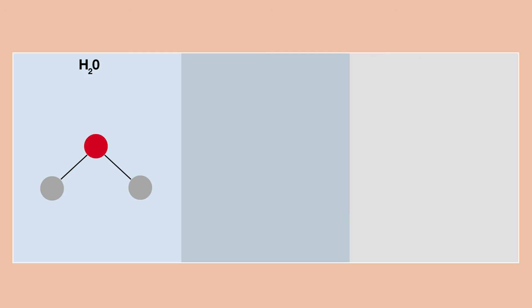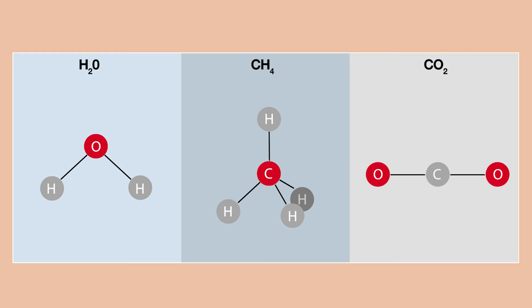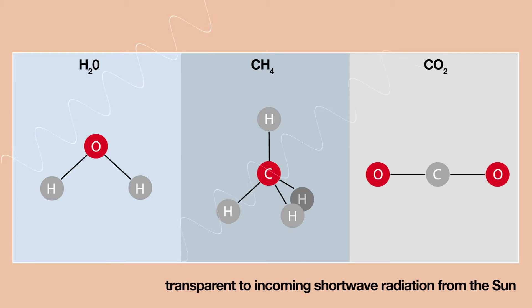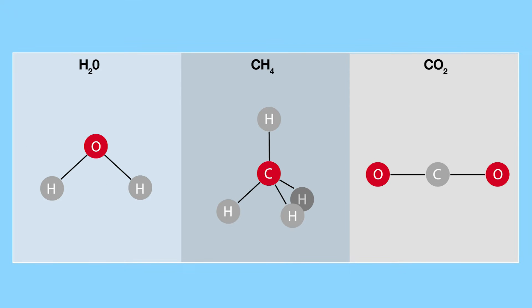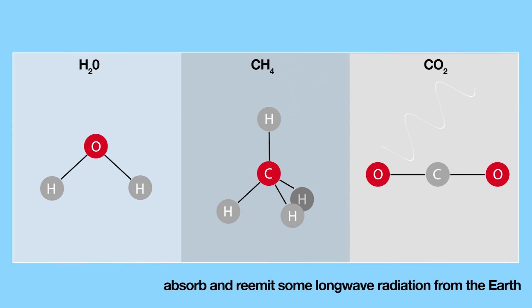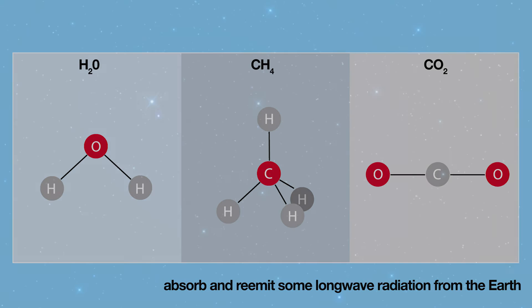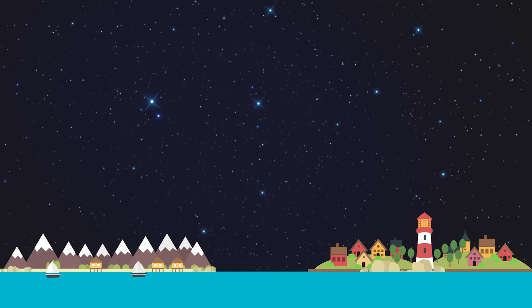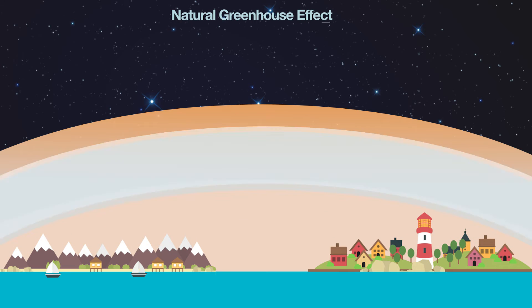The atmosphere contains many different gas species. Greenhouse gases, such as water vapour, methane and carbon dioxide, are transparent to the incoming shortwave radiation, but are opaque to some wavelengths of the longwave energy from the Earth. Molecules of these gases absorb longwave energy from the Earth, and re-emit less longwave radiation than they absorb. This traps some of the heat energy in the atmosphere, and causes the Earth's temperature to increase.